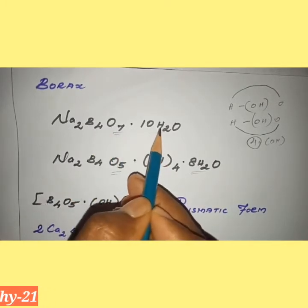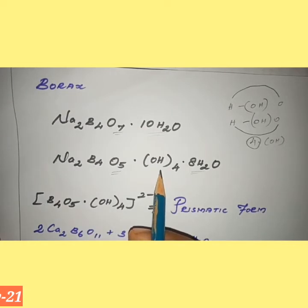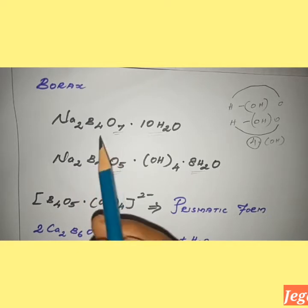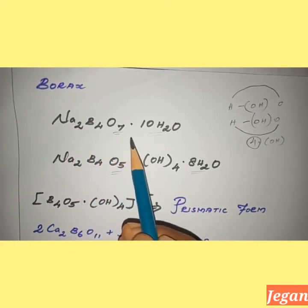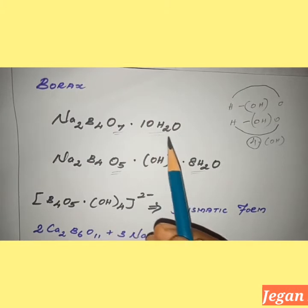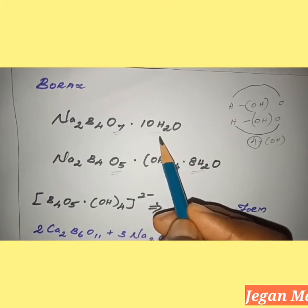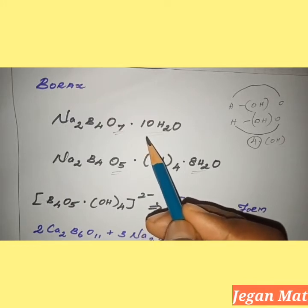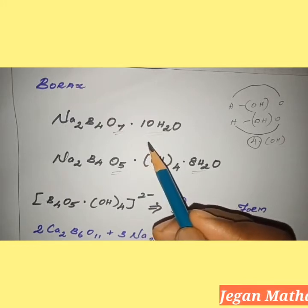Here the hydrogen molecule count is 20 times, and here also hydrogen molecules are 20 times. The name of this compound is sodium tetraborate decahydrate, because there are 10 times of water molecules. Water molecule as hydrate: 10 times is represented as deca. So the name is sodium tetraborate decahydrate.